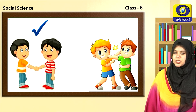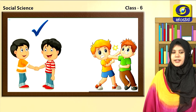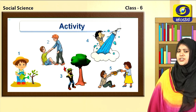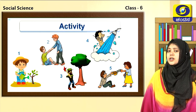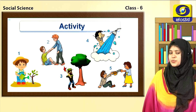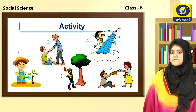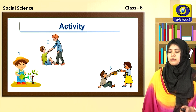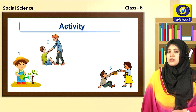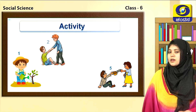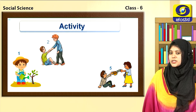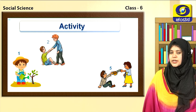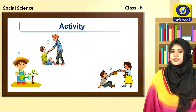Now I will give you an activity. You have to point out who are the good citizens among these pictures. Here is the activity — find out the good citizens. A boy who is watering a plant, another man who is helping another man, and a lady who is giving alms to a beggar — these are all good citizens.